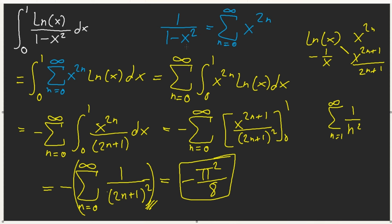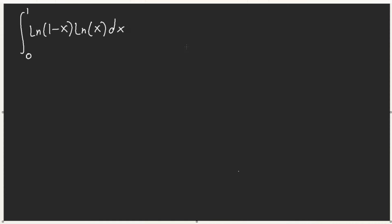If you want to challenge yourself, you could even prove that the sum of 1 over 2n plus 1 squared equals pi squared over 8, given that the sum of 1 over n squared equals pi squared over 6. Now we have the integral of ln of 1 minus x times ln of x dx. You should know how to solve this for advance. We see ln of 1 minus x, which is not integrable, so we're going to use Taylor series. We know it: sum from n equals 1 to infinity of negative x to the power of n over n.